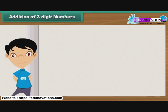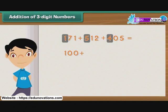Let us now see how we can simplify the addition of numbers with three or more digits. Let us try and add 171, 512, and 405. To simplify the addition, we proceed according to place values. Let us begin with the digits at the hundreds place, that is 1, 5, and 4. We add 100, 500, and 400. The sum is 1000.